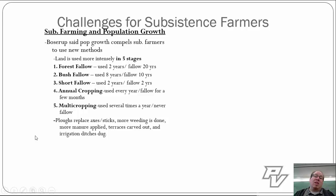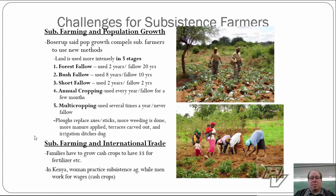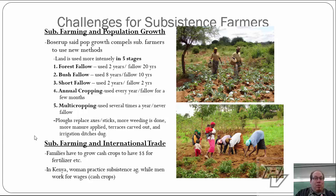In terms of subsistence farming and international trade, we've talked about the idea of the cash crop earlier. In many subsistence farms, you see plantation farms used to grow cash crops sold in MDCs — to gain cash to use for fertilizer, grow more cash crops, earn more cash, buy more fertilizer, and eventually feed and sustain their families. In Kenya, for example, women would practice subsistence agriculture to feed their families, while men would practice agriculture for cash crops.